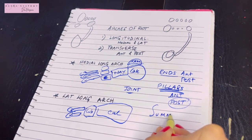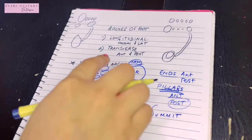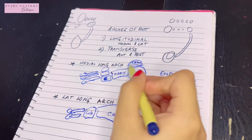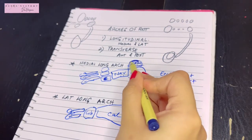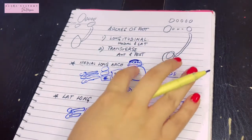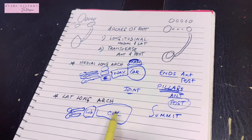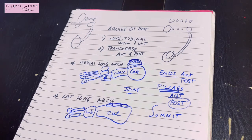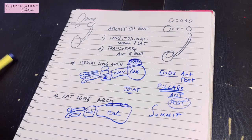The summit — meaning the highest point — of the medial longitudinal arch is the superior articular surface of the talus bone. In the lateral longitudinal arch, the summit is the superior articular facets of the calcaneum bone. These are the highest points in both arches respectively.